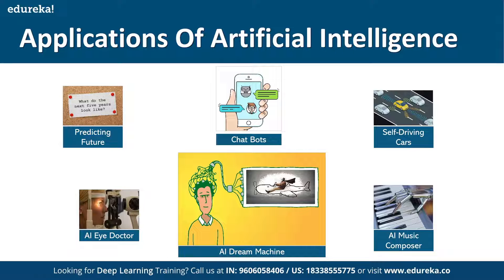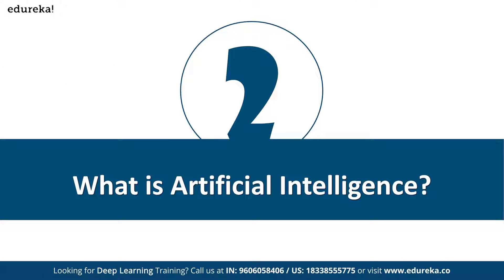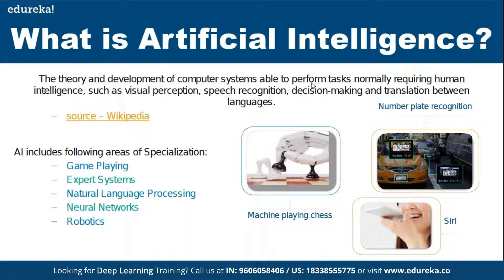Self-driving cars are another application of AI. Music composers, the dream machine, eye doctor systems — these are also there, along with predicting the future, which is still under research. Robots performing operations are also an application. Overall, AI is about making computers perform human activities like visual perception, speech recognition, and decision making.